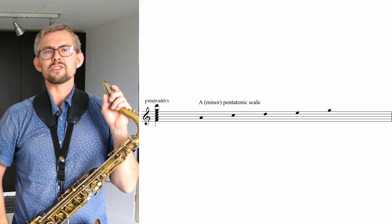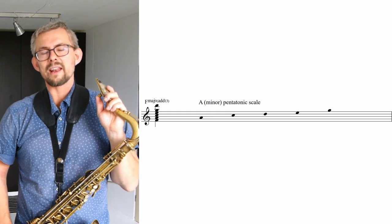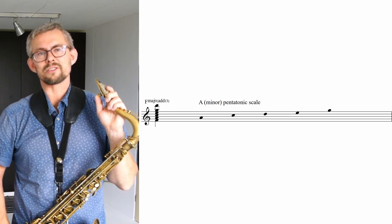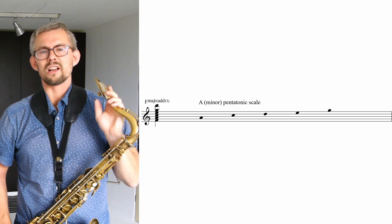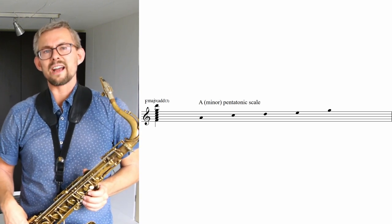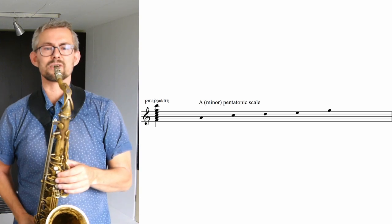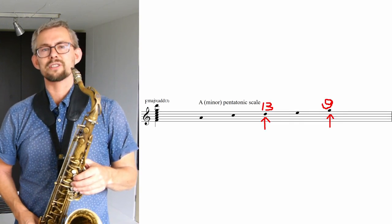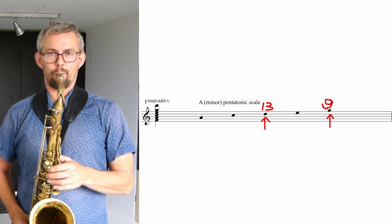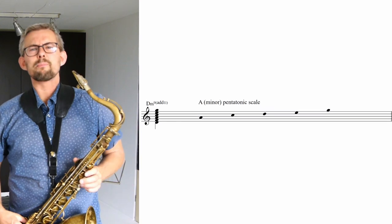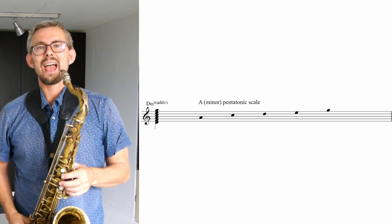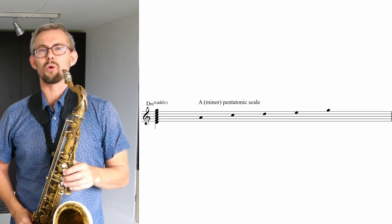Looking further in the A minor pentatonic scale, we get the F major chord. The notes of the F major chord are F, A, C, and E — and on the A minor pentatonic scale, we have A, C, and E, which are very common notes in the F major scale. So we get an F major 9-13, with D as the 13 and G as the 9. Pushing it a bit further, we can also get a D minor 7-9-11 chord, with E as the 9th and G as the 11th.